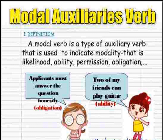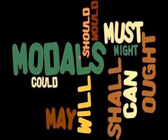Now, coming to modal auxiliary verbs. Modal auxiliary verbs define the mode or method of the action. They also have special functions to perform. They indicate modality like ability, permission, and obligation. For example: two of my friends can play guitar — here 'can' is the modal verb showing the ability of friends. Applicants must answer the question honestly — here 'must' is showing obligation. In my next video, I will explain the modals. The modals are: must, might, can, ought, shall, will. In the next video, I will make clear where to use these modals.